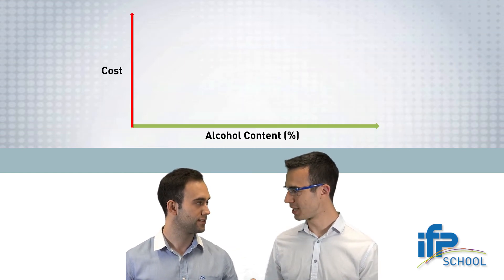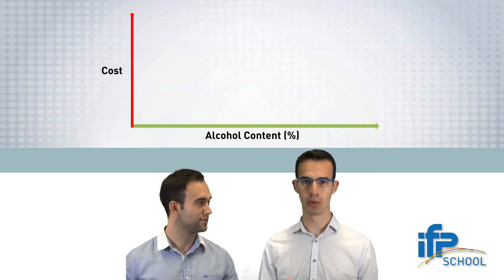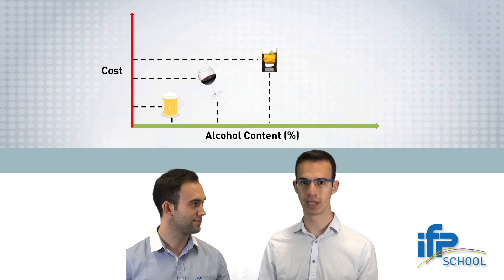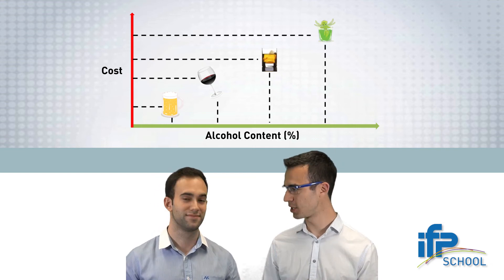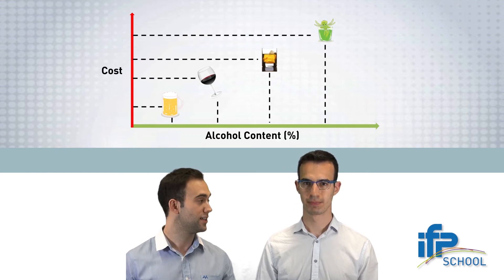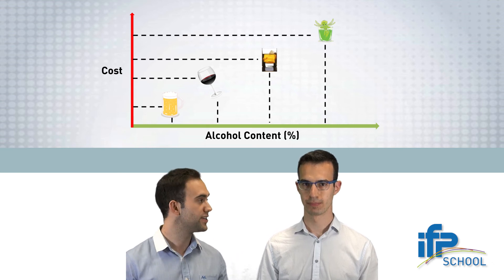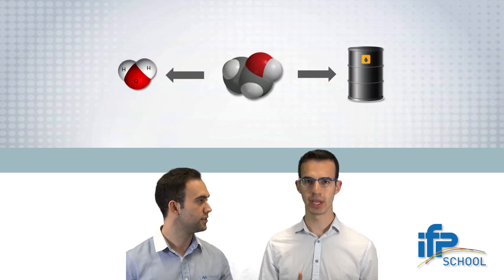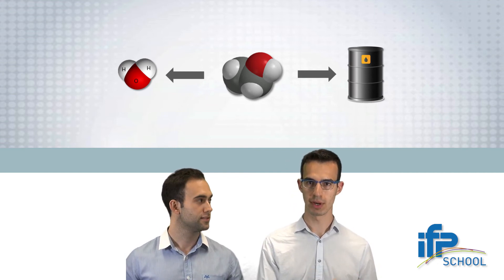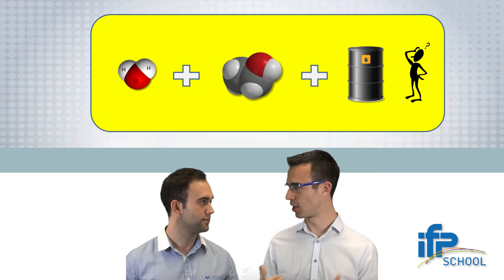I now understand why different alcoholic beverages are priced differently. The more the alcohol content, the more processing has been done in order to remove water from the mixture. Well, it's a way to look at it, but your logic is correct. See, thermodynamics is everywhere, from biofuels to alcoholic beverages. Biofuels — wait, I remember you told me that ethanol can mix both water and gasoline, but how do all these components behave as a whole mixture?